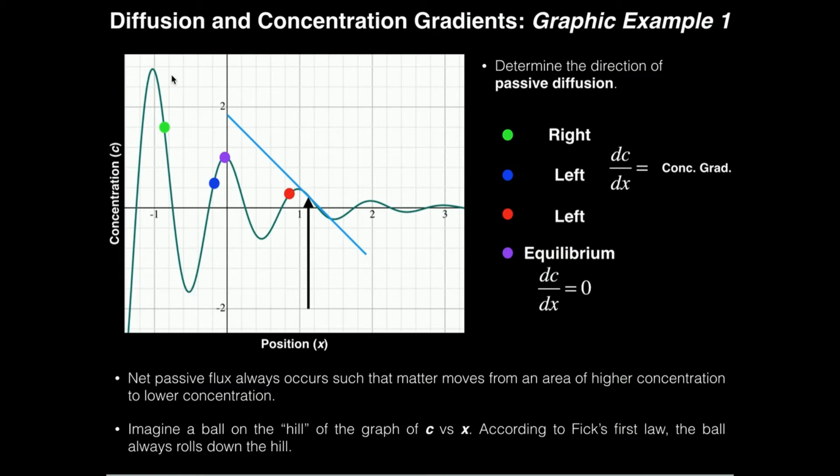In fact, you can pick any two points on here for the most part, and you'll find that if you imagine this as kind of a hill in physical terms that we are used to dealing with, the ball, so to speak, always rolls down the hill to equilibrium.